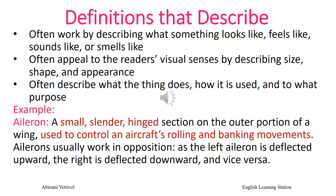The first type of definition is the definition that describes. These definitions work by describing what the term looks like, feels like, sounds like, or smells like. They appeal to the reader's visual senses by describing the size, shape, and appearance, and also describe what the thing does, how it is used, and for what purpose.